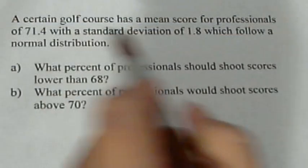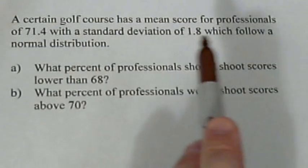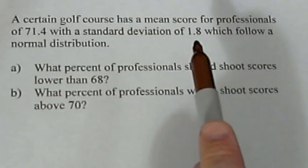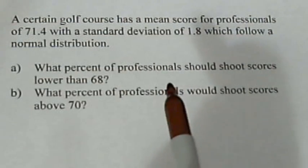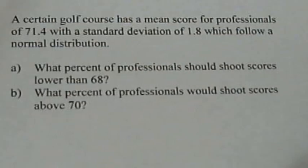Okay, we're going to do some normal distribution problems. We have a certain golf course. The professionals average 71.4 and a standard deviation of 1.8. We want to know what percent of professionals shoot lower than 68 and what percent would shoot above 70.